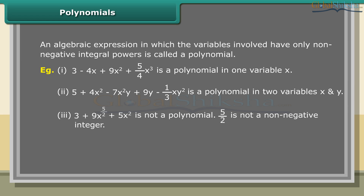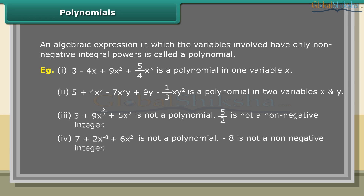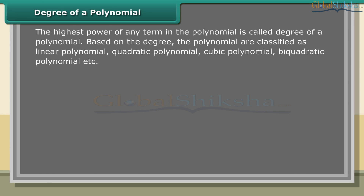Example 3: 3 + 9x^(5/2) + 5x² is not a polynomial because 5/2 is not a non-negative integer. Example 4: 7 + 2x^(−8) + 6x² is not a polynomial because −8 is not a non-negative integer. The highest power of any term in the polynomial is called the degree of a polynomial.